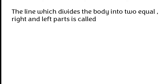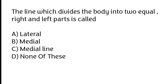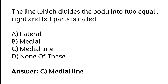The line which divides the body into two equal right and left parts is called: lateral, medial, medial line, or none of these. The correct answer is option C. The line which divides the body into two equal right and left parts is called medial line.